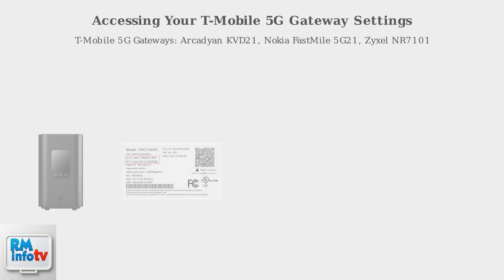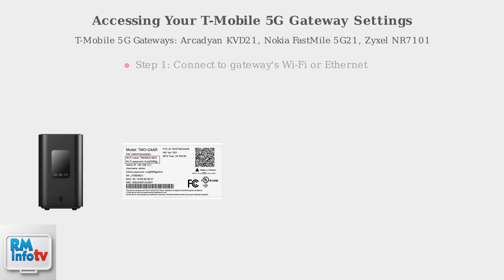T-Mobile 5G gateways, like the Arcadian KVD-21, Nokia Fastmile 5G-21, and Zyxel NR7101, are managed via a web interface or mobile app. To access settings, connect to the gateway's Wi-Fi or Ethernet.